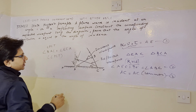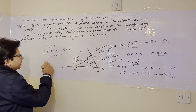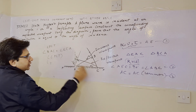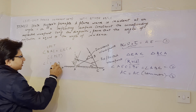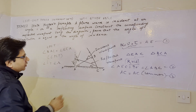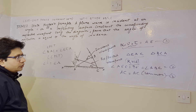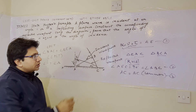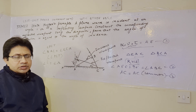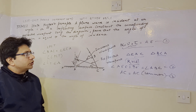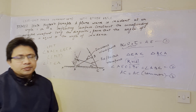Since the triangles are congruent, by CPCT their corresponding angles are equal. Therefore angle BAC = angle ECA. Angle BAC is the angle of incidence i, and angle ECA is the angle of reflection r. Thus we have proved that the angle of incidence equals the angle of reflection. This completes the proof of the second part of the problem.